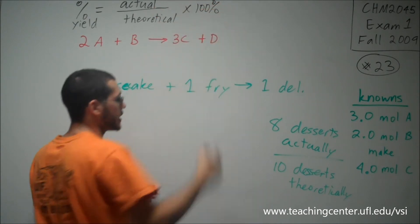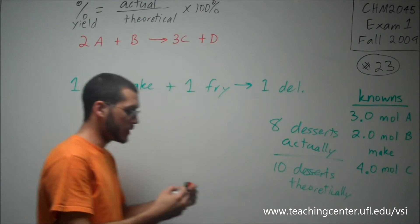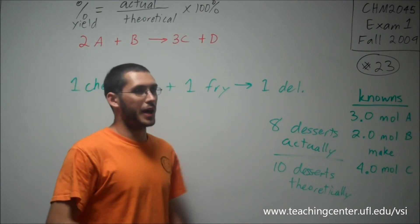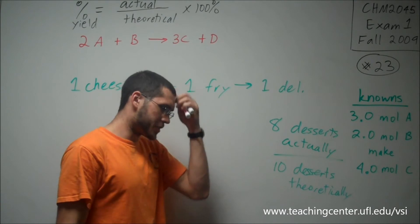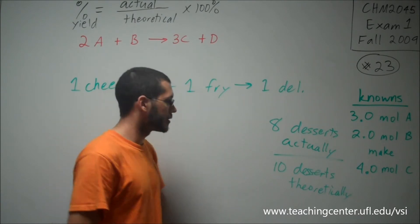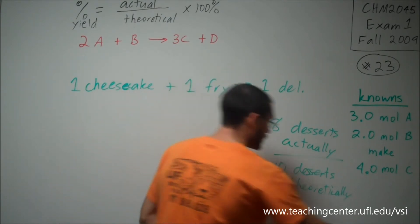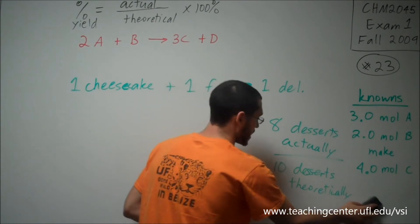And again, why did the actual not equal the theoretical? Because I maybe messed up somewhere. Maybe one of the fried cheesecakes sadly got burnt or something like that. So that's why actual is less than the theoretical.